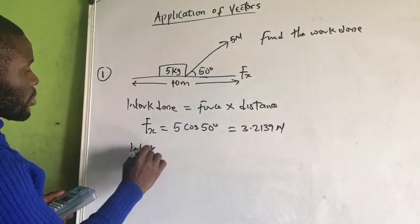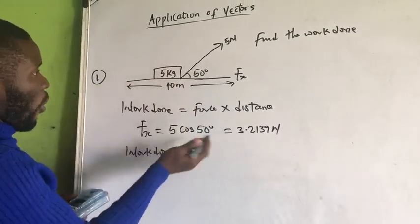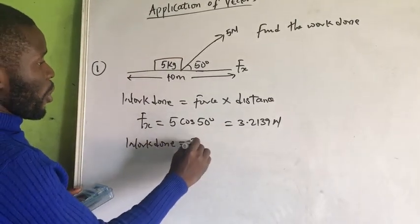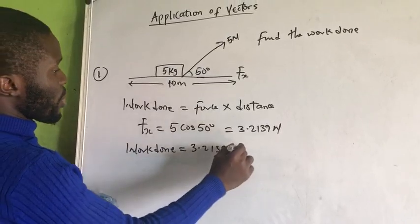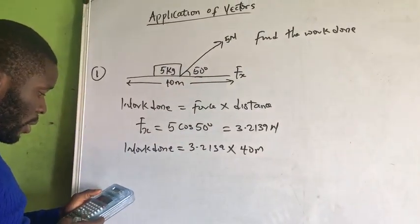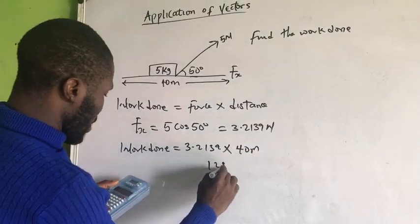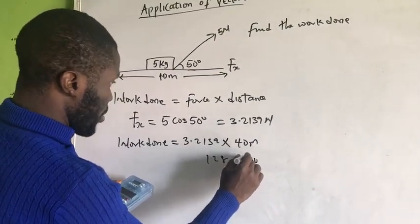So now, the work done now is what? The force is 3.2139 times distance, which is 40 meters. So, that is 40. That is 128.556 newtons.